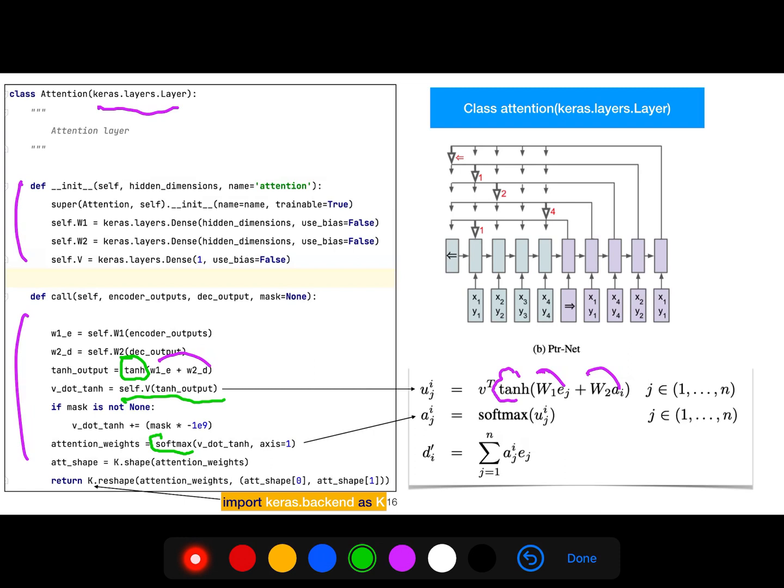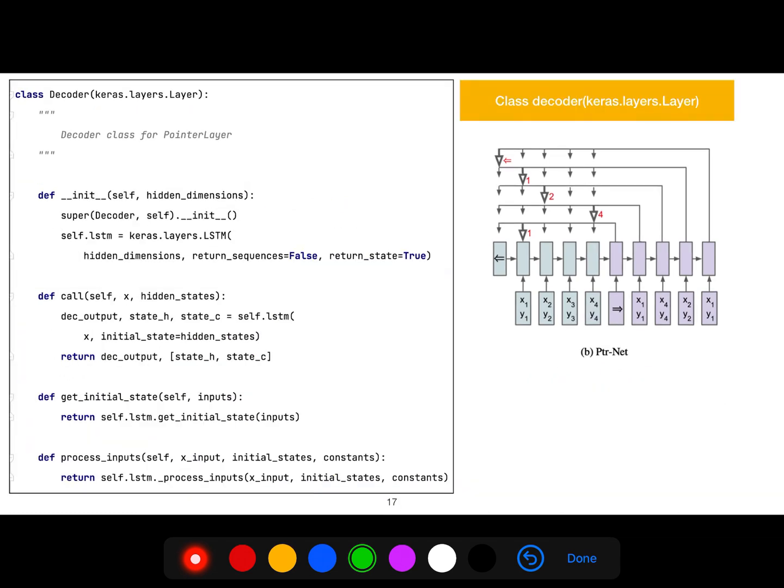We give it to... and then we reshape it because we can import keras backend as k. So k is our backend, and that's it. The decoder is very simple because we just need to call the LSTM and it returns decoder output.